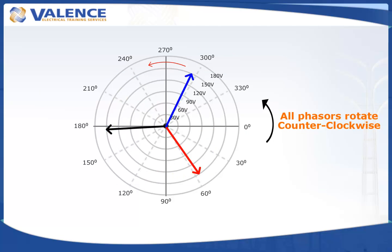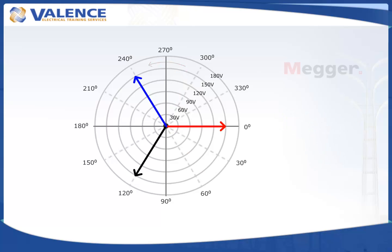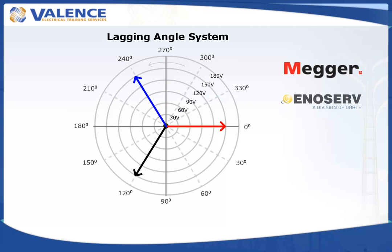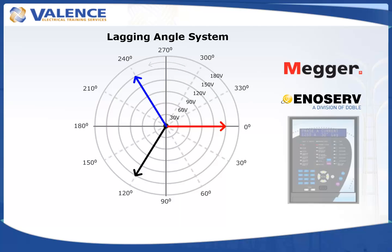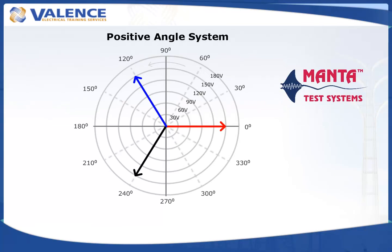The previous examples showed the system used by Maker test sets, EnnoServe RTS software, and GE SR relays. Here's how you would draw the same phasor using test sets from Manta test systems and DOBLE. Notice that the angles have the same 0 to 360 degree reference, but they're drawn in the opposite direction.